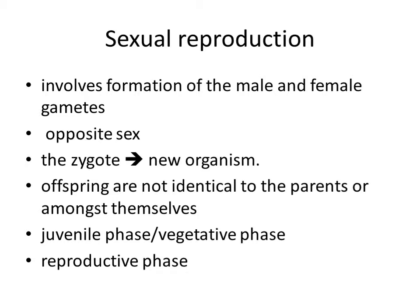All organisms have to reach a certain stage of growth and maturity in their life before they can reproduce sexually. That period of growth is called the juvenile phase or vegetative phase. This phase is of variable duration in different organisms. The end of the juvenile or vegetative phase marks the beginning of the reproductive phase. In animals, the juvenile phase is followed by morphological and physiological changes prior to active reproductive behavior. This reproductive phase is also of variable duration in different organisms.